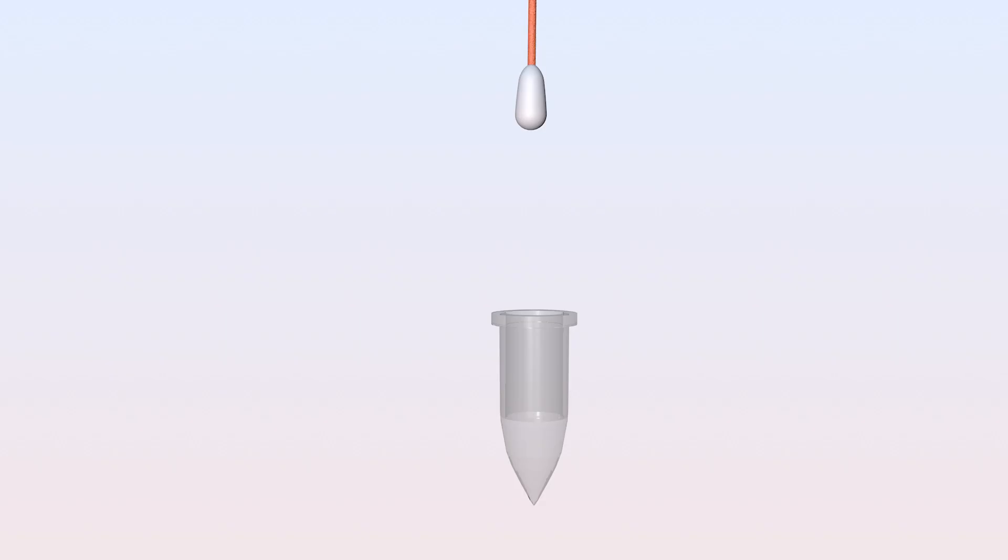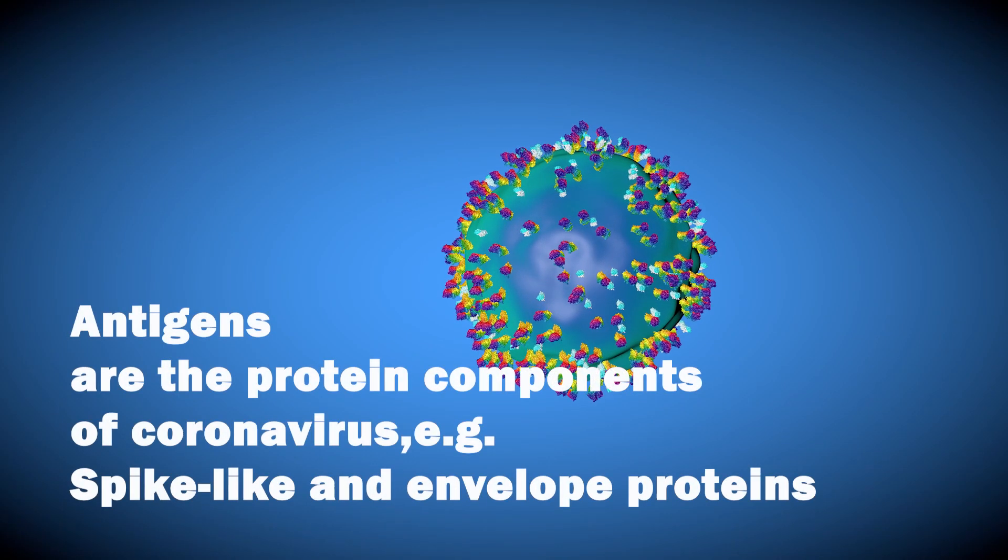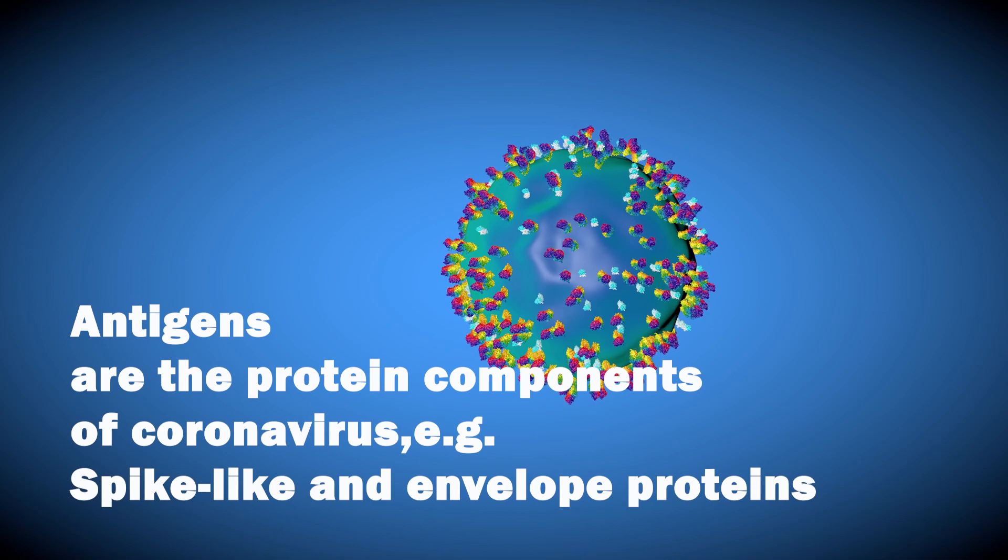A sample from an infected person will contain coronavirus antigens, which are the protein components of the coronavirus, such as spike proteins, envelope proteins, or other proteins.